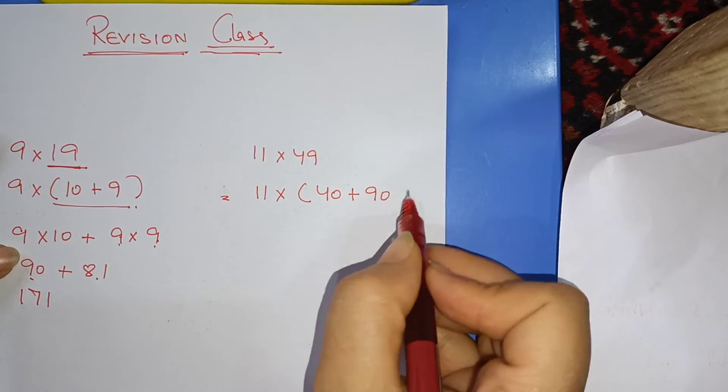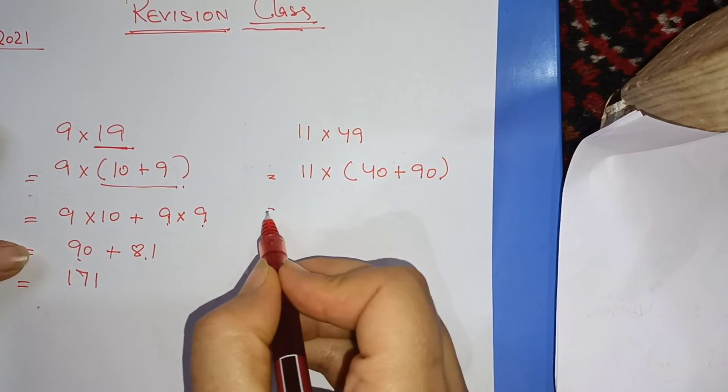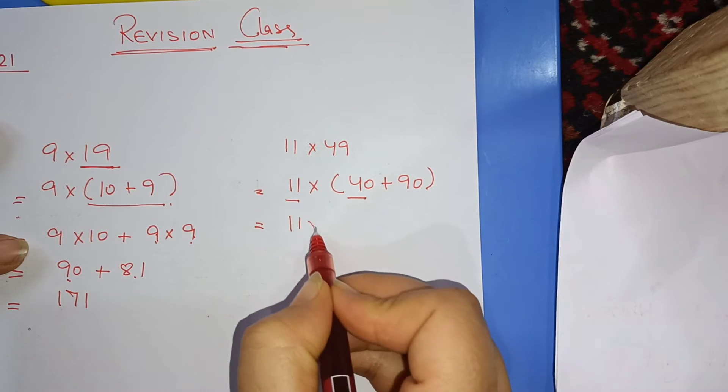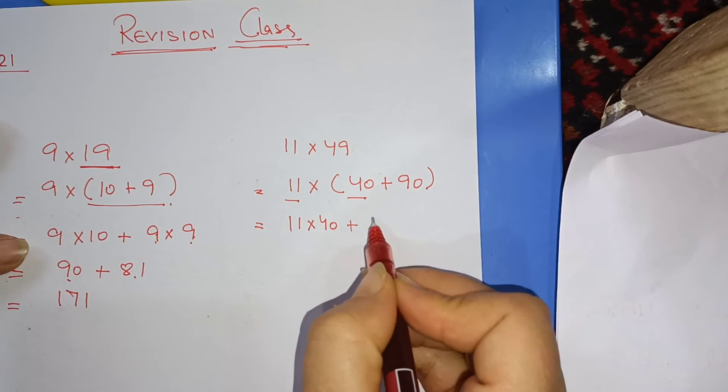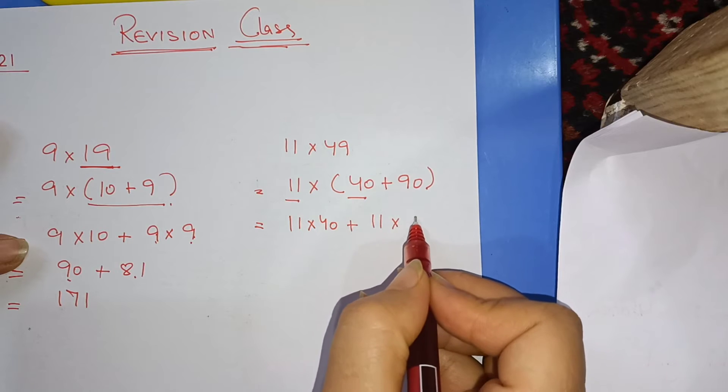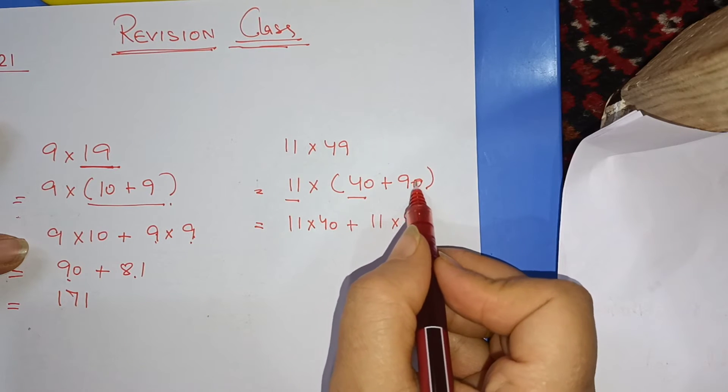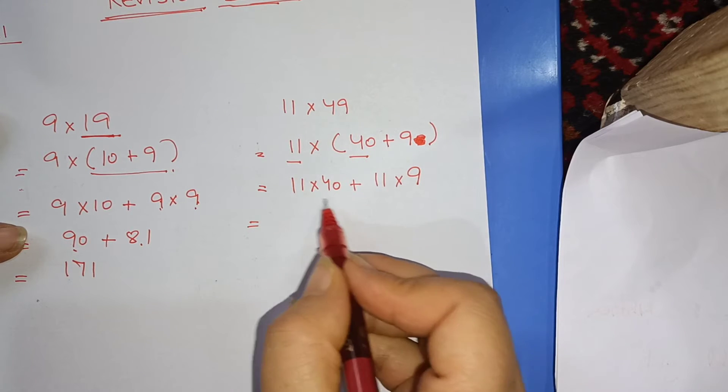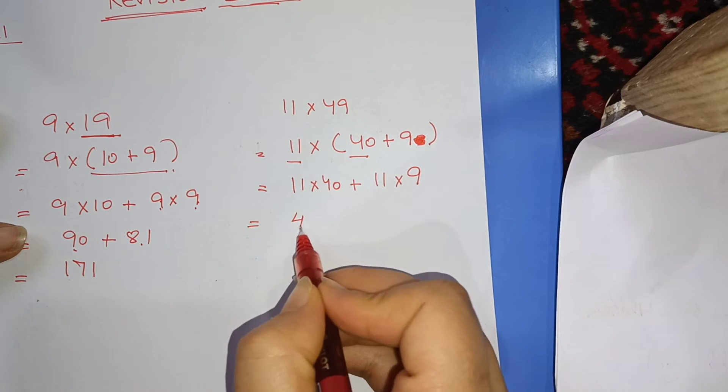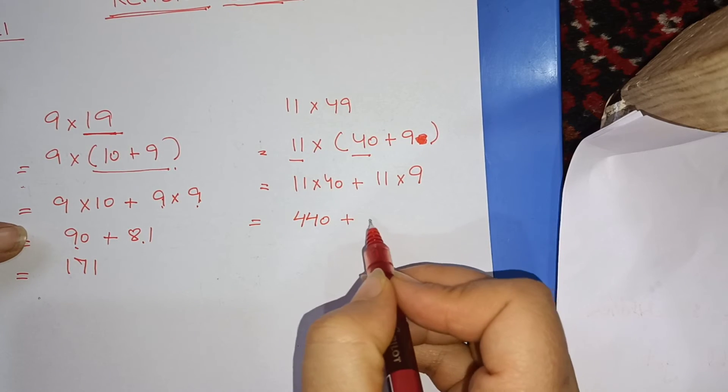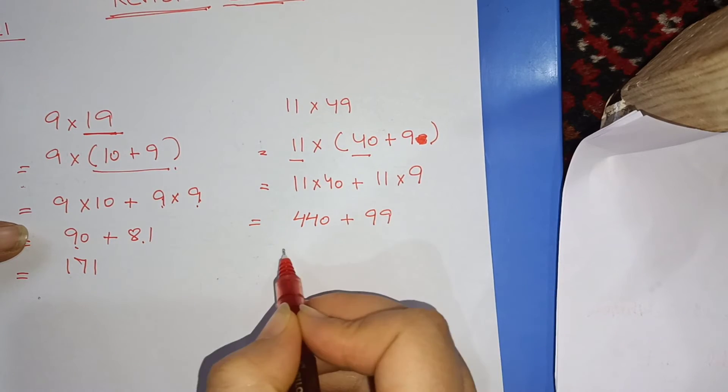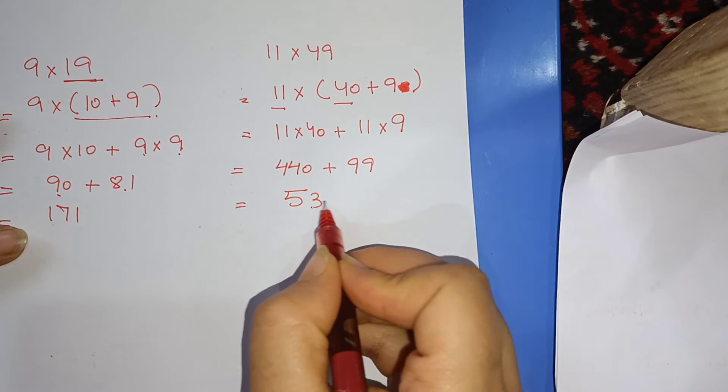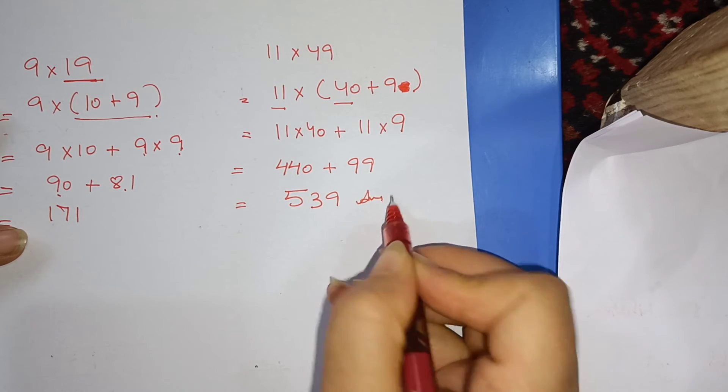That will be 11 into 49. So that's 440 plus 99. If we add these two, 539 is your answer.